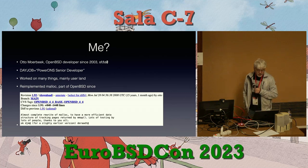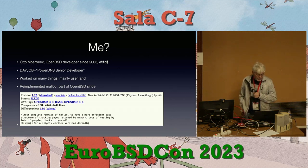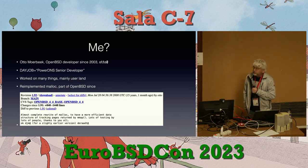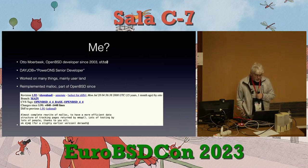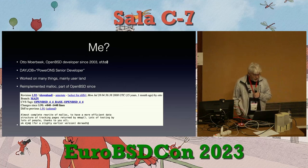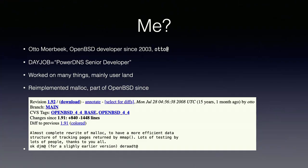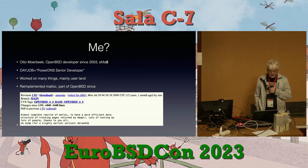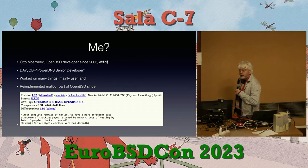One of my major contributions during the years has been my malloc implementation, which is incorporated by this commit I'm showing here in 2008, which is about 15 years ago. Before that, OpenBSD used the same malloc implementation as FreeBSD did — phkmalloc. In the meantime, FreeBSD also switched their malloc implementation.